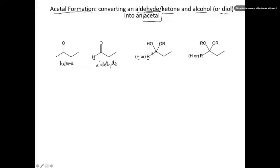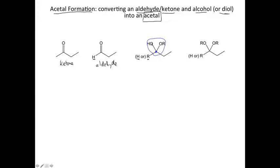What I really want to do is focus on the carbon that was the carbonyl, shown in blue. Instead of having a double bond to an O as in the aldehyde or ketone, we now have two single bonds to O. When you have an OH and an OR on that carbon, that is called a hemiacetal.